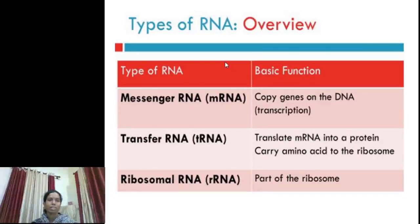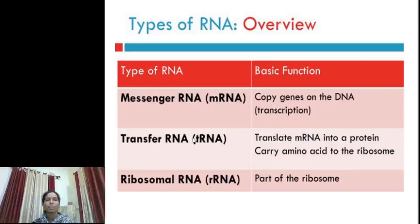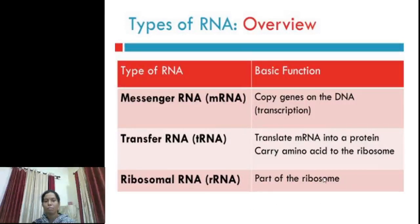Let us see the overview of the functions of these three RNAs. mRNA copies genes on DNA. tRNA translates mRNA into protein and carries amino acids to the site of protein synthesis, that is the ribosome. rRNA is itself part of the ribosome.